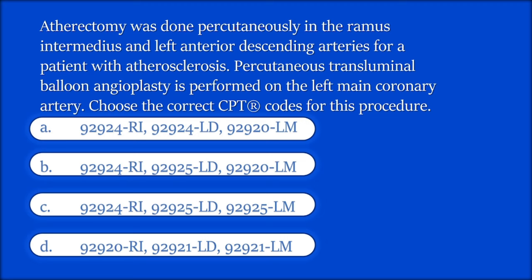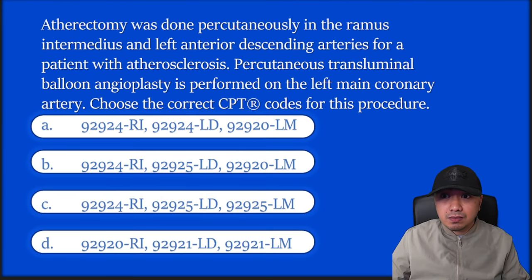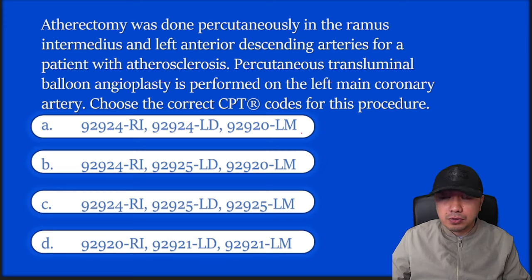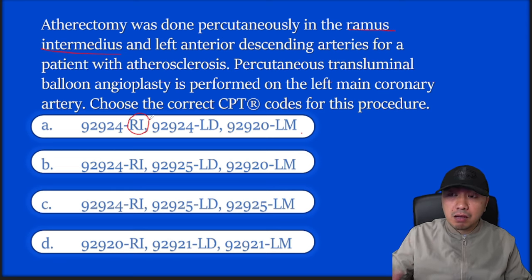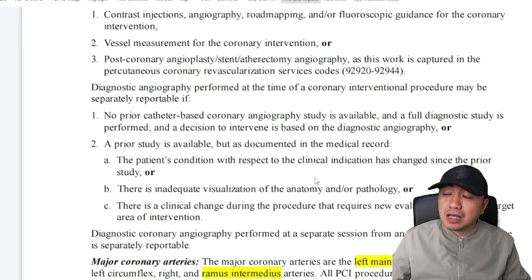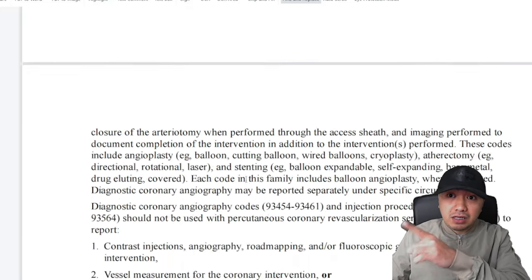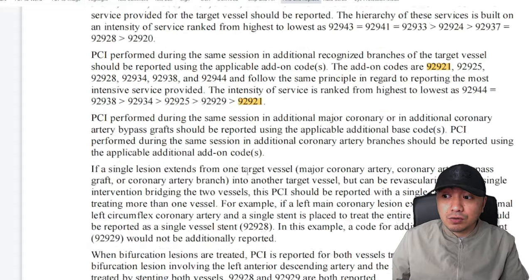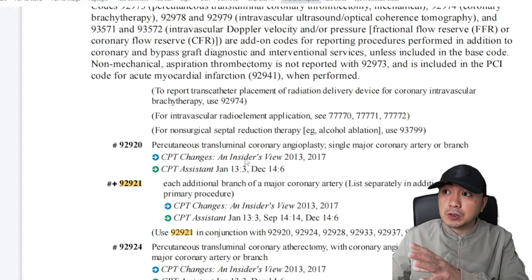This is quite a lengthy question. If you get this type of question, I highly suggest you skip it if you don't know the concept because you will have a hard time searching for the codes one by one. This is an atherectomy procedure done towards the ramus intermedius — that's your RI. Check your modifiers at the back portion of your cover page for the coronary vessel. We have five major coronary arteries. The guidelines are located just before your 92920 code — these are your PTCA or PCI procedures.